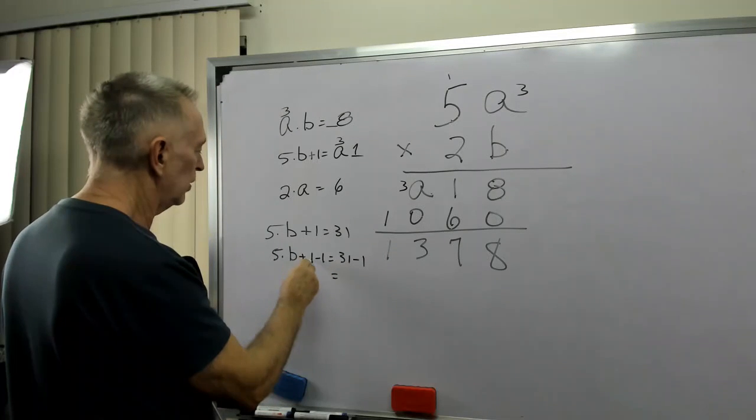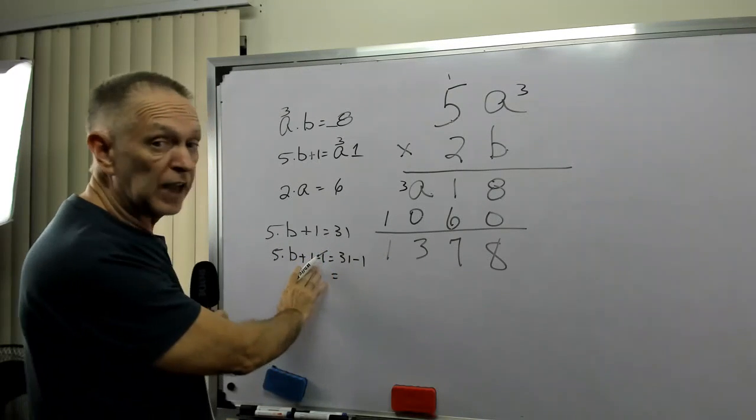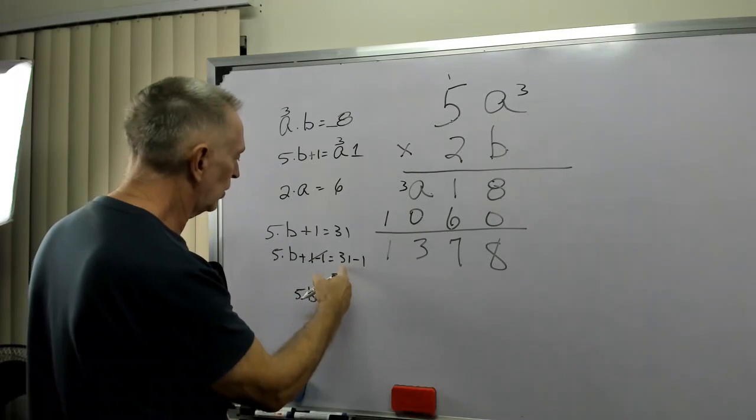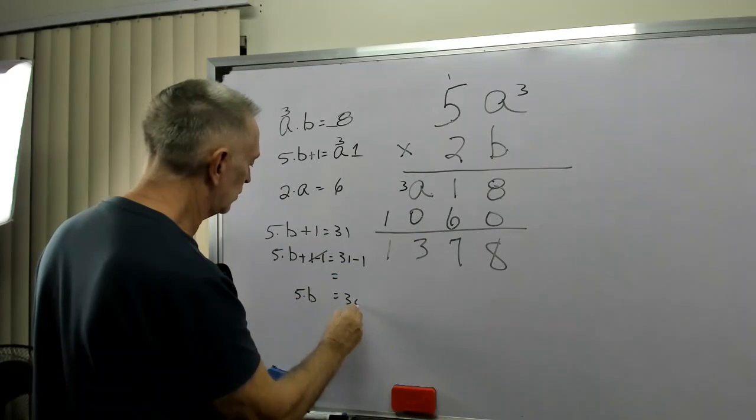So, 5 times B plus 1 minus 1 equals 31 minus 1. So, plus 1 minus 1, the 1's cancel. So, I end up with 5 times B equals 31 minus 1, which is 30.